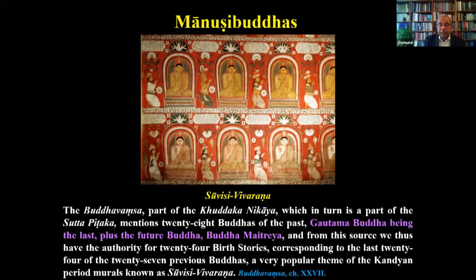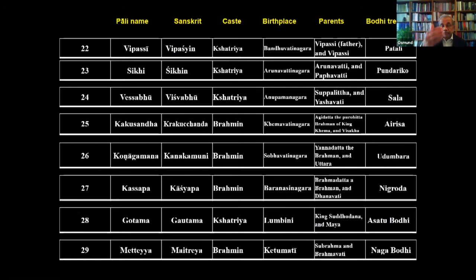Something you obviously see when visiting any temple in Sri Lanka is what we call the Siri Siri Srivira. According to the Buddhavamsa, a Pali text, it mentions 28 Buddhas of the past — Gautama Buddha being the last — plus the future Buddha Maitreya. From this source we have authority for 24 birth stories, corresponding to the last 24 of the 27 previous Buddhas, Maitreya being the 28th — a very popular theme of Kandian period murals known as the Siri Siri Srivira. The final Buddhas normally seen are: Sikhi, Bezabu, Krakatandu, Karakamuni, Kashyapa, Gautama, and then Maitreya.